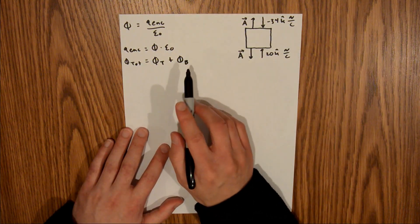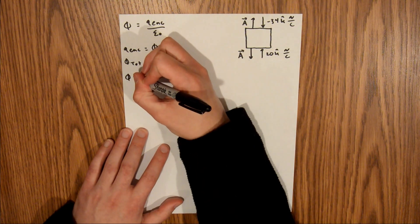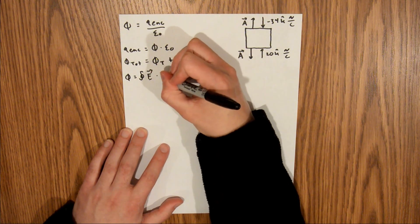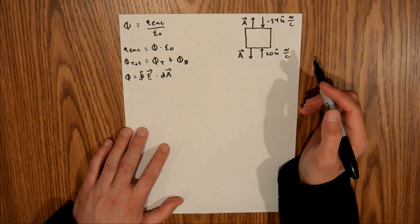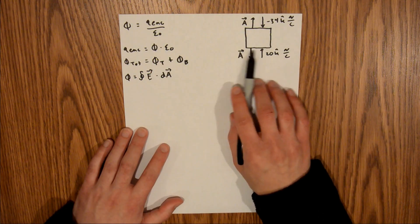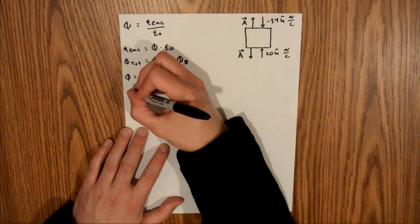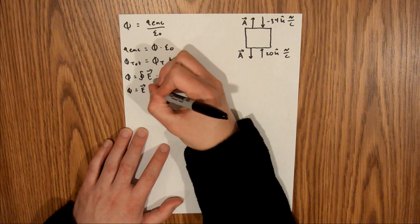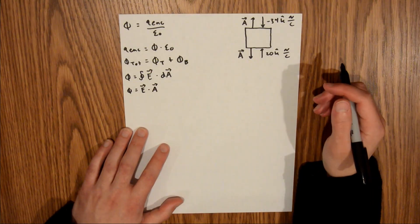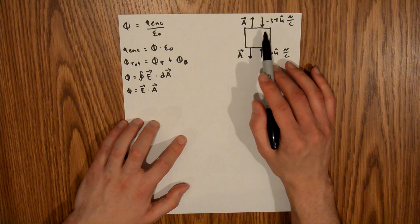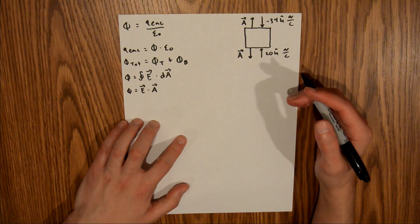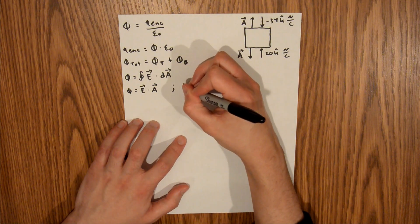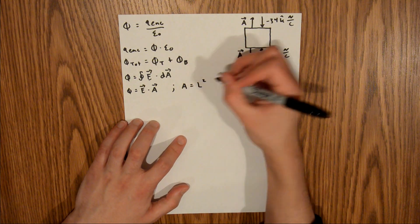For each of these individual fluxes, we know that is equal to the integral of the electric field dotted with the differential area. Now in this case, both of our surfaces are planar, so this can be simplified: flux is equal to the electric field times the area. Our surfaces are the face of a cube, and the area of a square is equal to the side length squared.